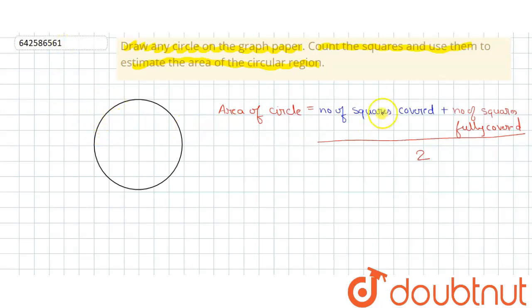Total number of squares covered is 1, 2, 3, 4, 5, 6, 7, 8, 9, 10, 11, 12, 13, 14, 15, 16, 17, 18, 19, 20, 21, 22, 23, 24, 25, 26, 27, 28, 29, 30, 31, 32, and 33.